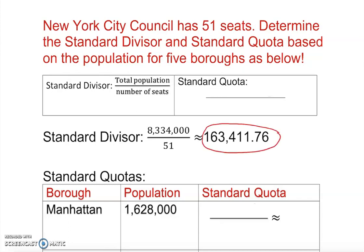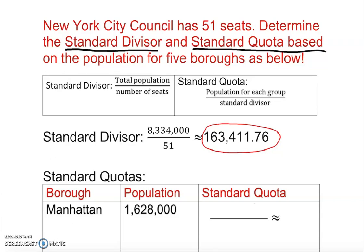Now the next question asks for the standard quota. Standard quota is each group's population divided by the standard divisor. We already found the standard divisor, so we'll plug it in for each borough group.